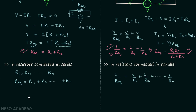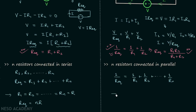Now consider the special case where all N resistors have the same resistance value R, meaning R1 equals R2 equals ... equals Rn equals R. In series combination, the equivalent resistance equals N multiplied by R. In parallel combination, 1/R_eq equals N/R, therefore R_eq equals R/N.